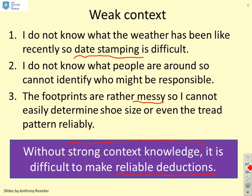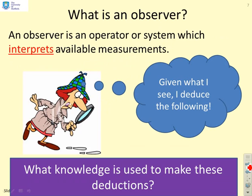So I need both good quality measurement and good quality context knowledge if I want to make that measurement give me a valuable inference. An observer is an operator or system which interprets available measurements, and the key question is: what knowledge can we use alongside the measurement in order to make reliable inferences?